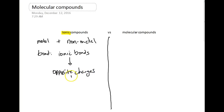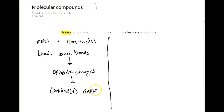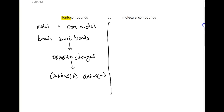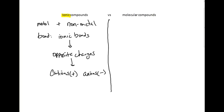Those opposite charges we talked about in the last unit are formed from cations — those positive ions being attracted to anions, those negative ions. So metals form cations when they lose electrons, and non-metals form anions when they gain electrons. These opposite charges are attracted to each other, and that's how we form ionic bonds in an ionic compound.